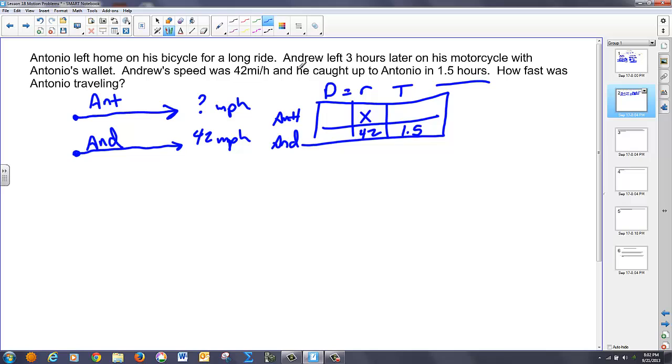Now, if you notice, Andrew left three hours later on his motorcycle. If he catches up in 1.5 hours, that means he's traveled a total of 4.5 hours. So, in this case, we can multiply across. We have 4.5X for Antonio. Andrew, we simply multiply 42 times 1.5. That's going to get a 63.